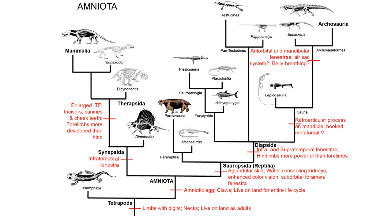This is a phylogenetic relationship of the amniotes, which got started about 310 million years ago. This includes both stem and crown groups. Stem groups include archosaurs like dinosaurs, pterosaurs, and ichthyosaurs. Crown groups include modern-day testudines, lepidosaurs (snakes and lizards), archosaurs like crocodilians and birds, and modern-day mammals.